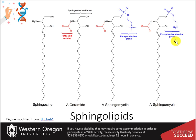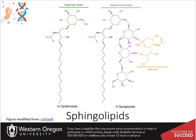Sphingolipids are found in all cells of the body but are highly enriched in the nervous system and are required for proper brain development. Sphingolipids are also commonly modified with polar carbohydrate head groups, forming cerebrosides and gangliosides. The gray matter in neurons within the central nervous system have high levels of gangliosides, whereas sphingomyelin and galactosylceramide are more common in oligodendrocytes, cells that support neuronal function and myelin formation.